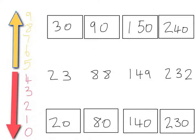Here are the multiples of ten that should be either side of every number. Twenty-three will round down to twenty. Eighty-eight rounds up to ninety. One hundred and forty-nine rounds to one hundred and fifty. And two hundred and thirty-two rounds down to two hundred and thirty.